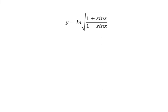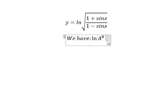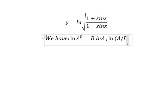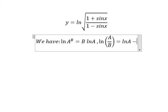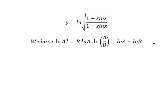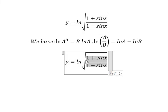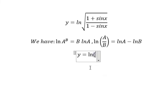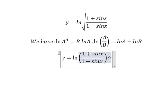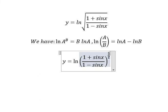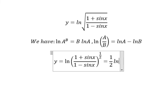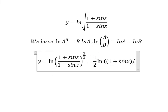For question number two, we use the formula: ln of a to the power of b equals b ln a, and ln of a over b equals ln a minus ln b. Our function has a square root, which is a power of one over two. So we bring the one over two outside: one over two times ln of (1 plus sine x) over (1 minus sine x).